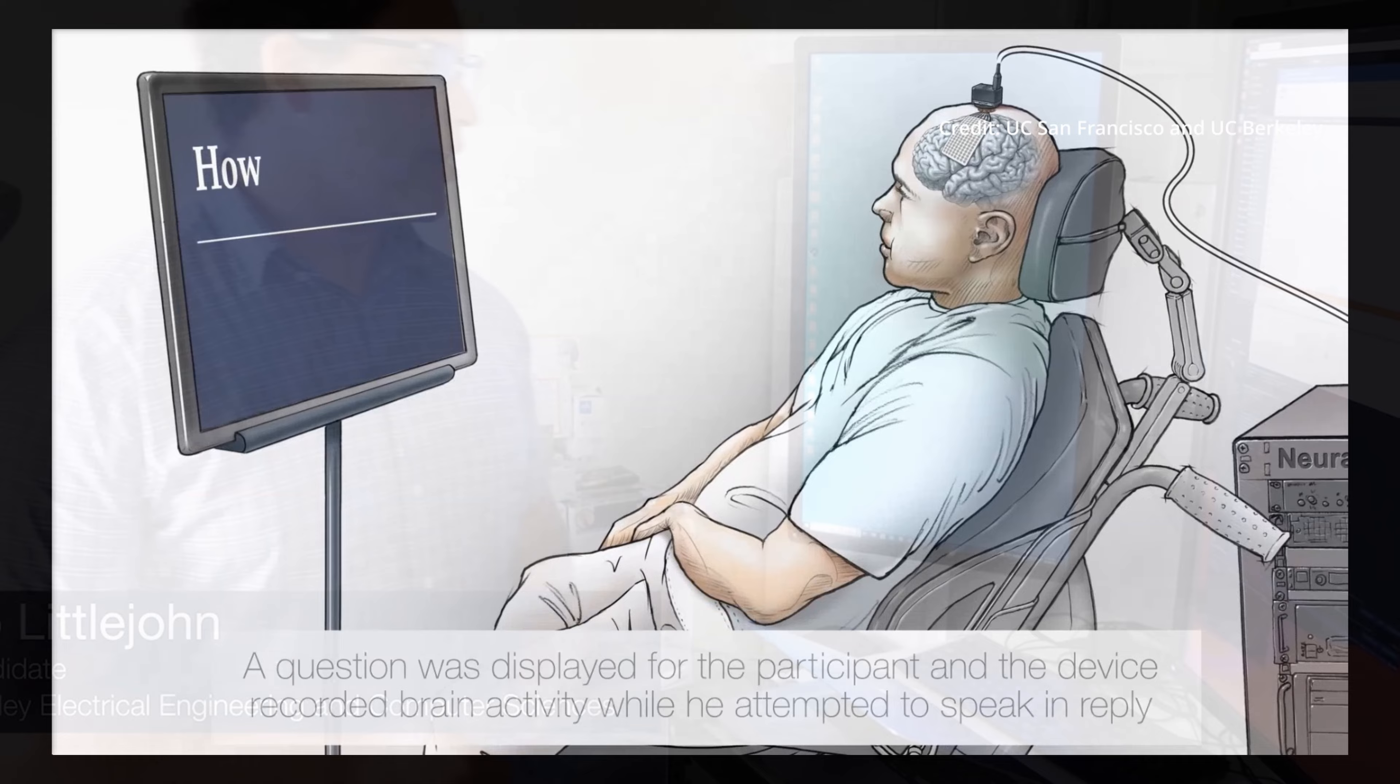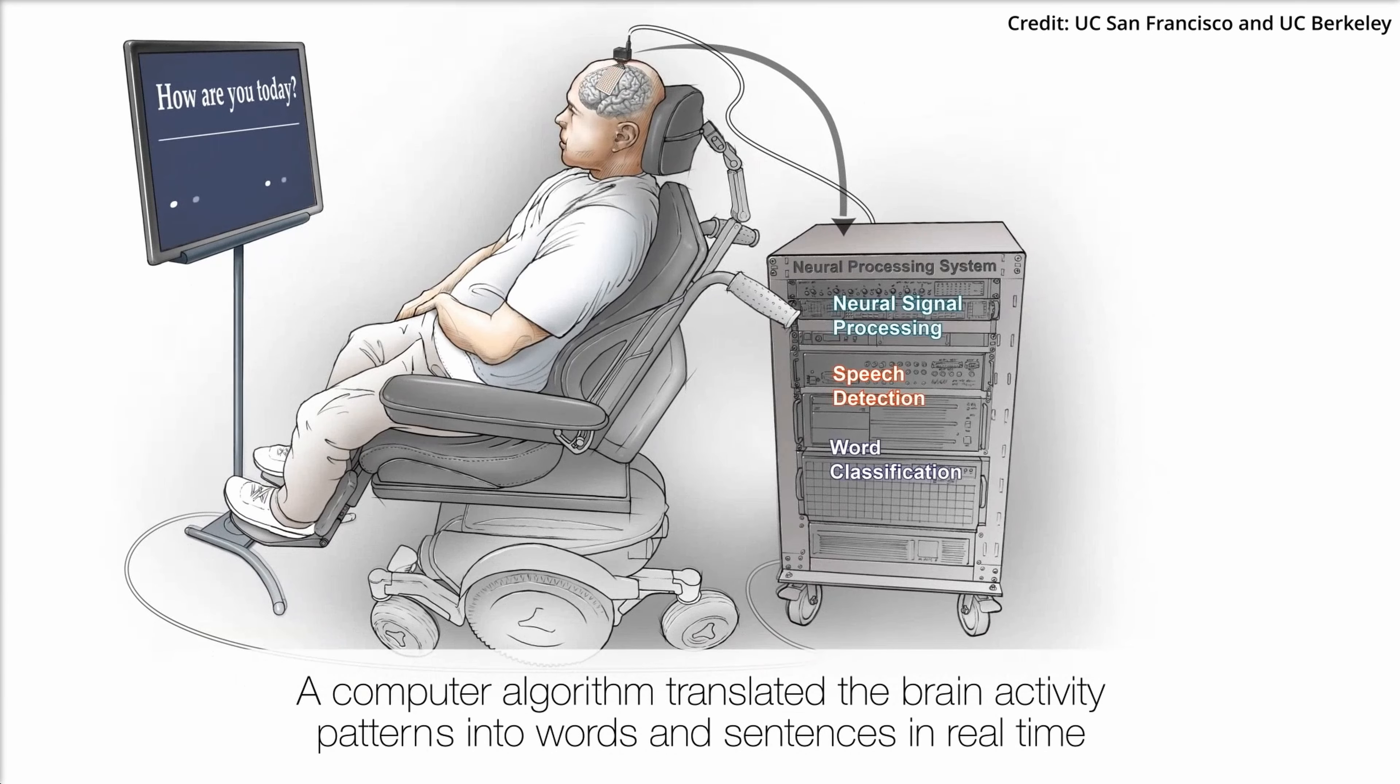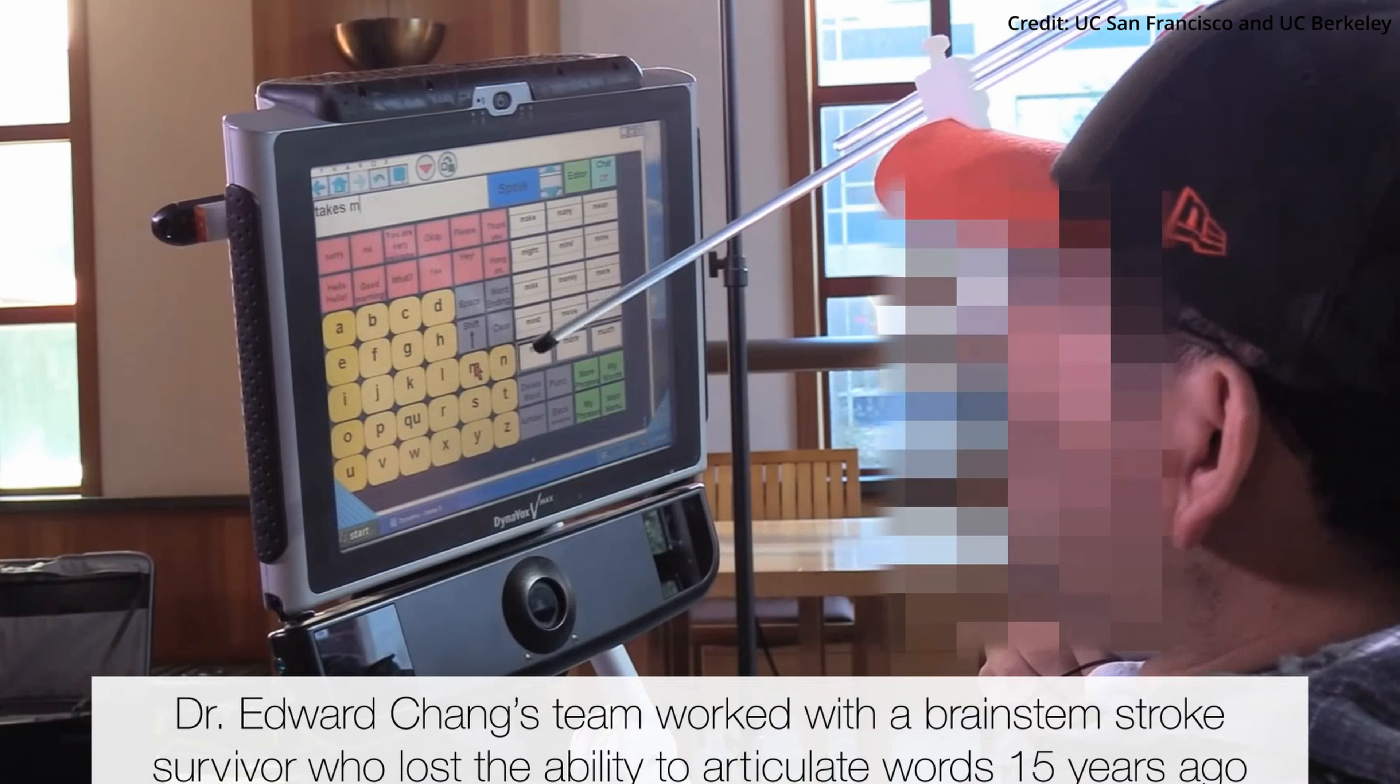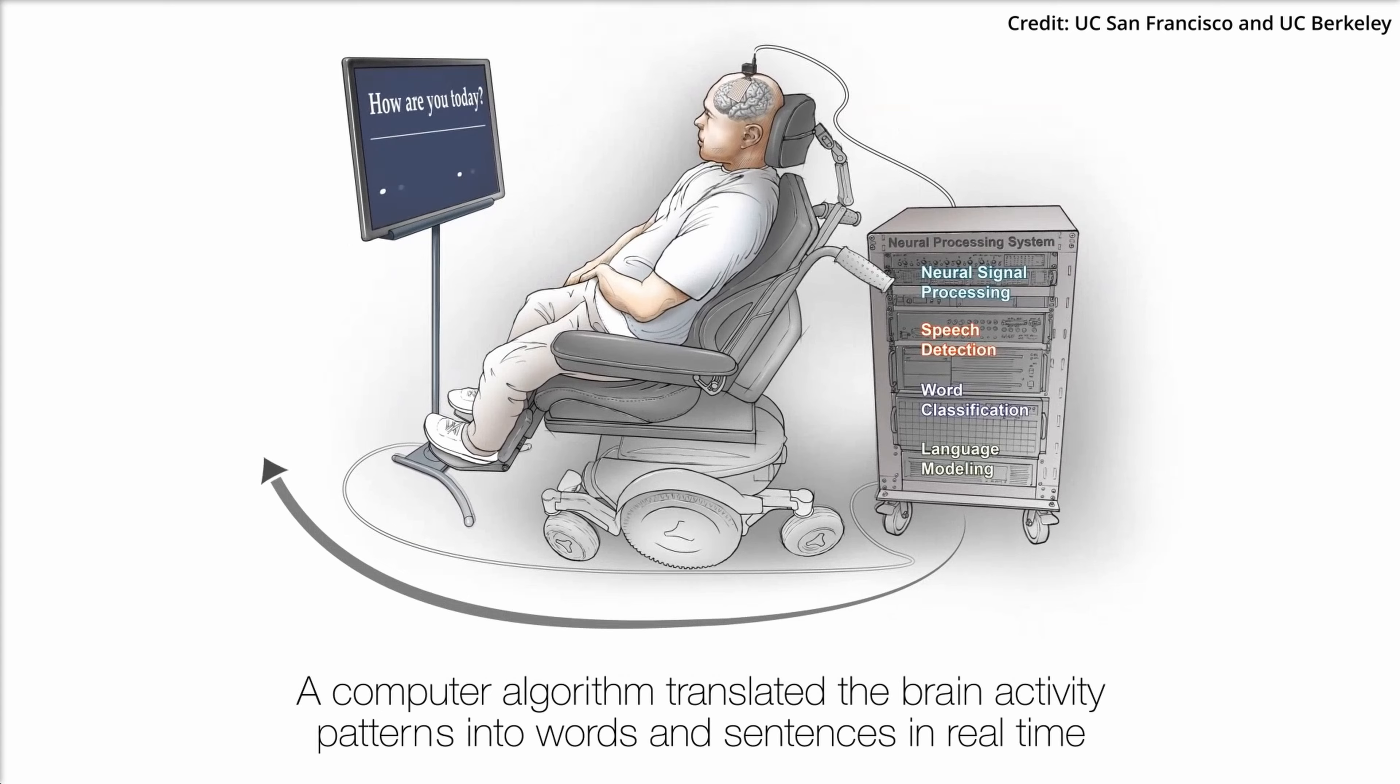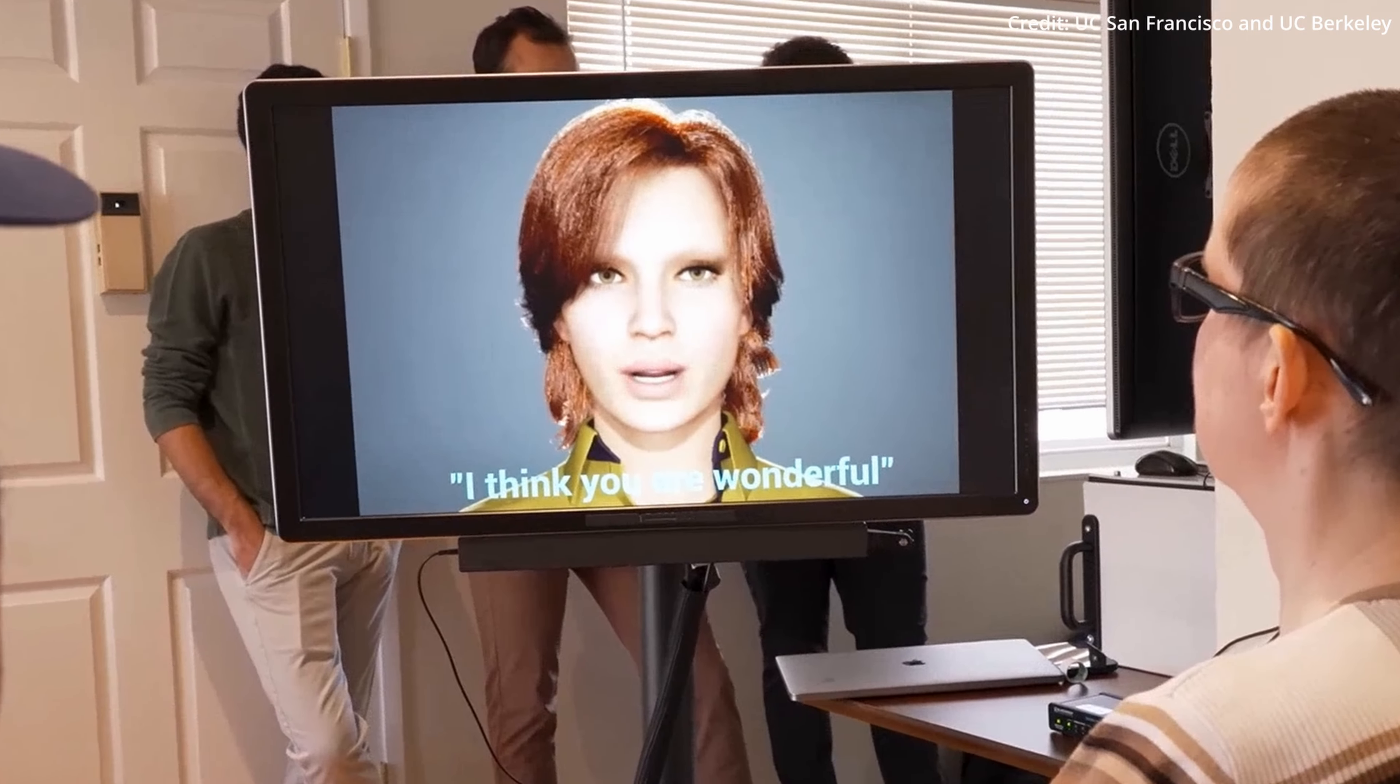Previous experiments conducted by the team demonstrated the possibility of decoding brain signals into text in a man who had also experienced a brain stem stroke. However, the current study takes things a step further by decoding brain signals into the intricacies of speech, including the movements that animate a person's face during a conversation.